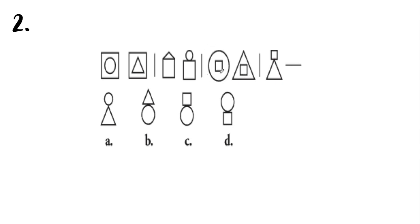In the third set, the boxes are inside the other shapes. The first one has a circle with a box inside it; the second has a triangle with a box inside it — again the circle and triangle order is switched. In the last set, the first combination has a triangle with a box on top. That means the answer should be a circle with a square on top of it. The correct answer is letter C.